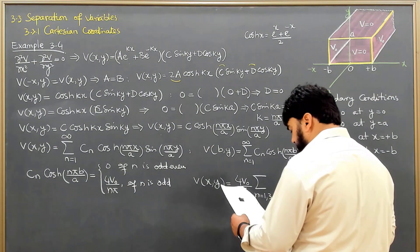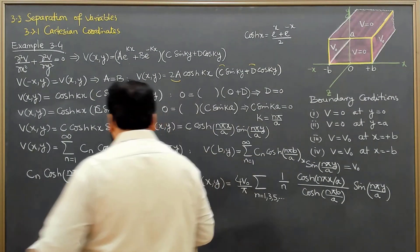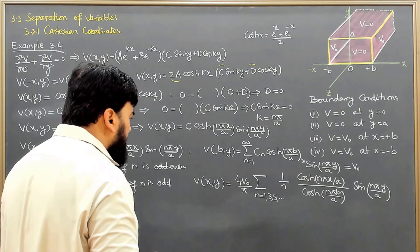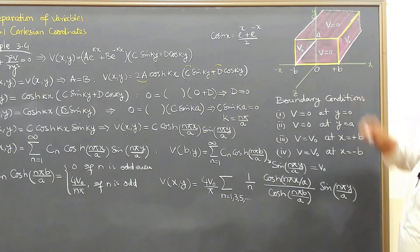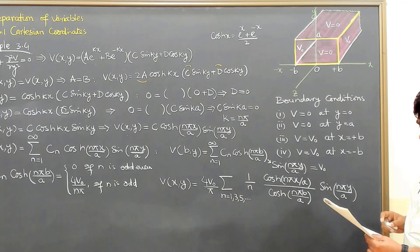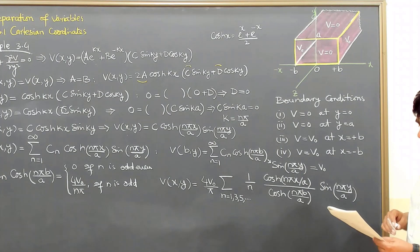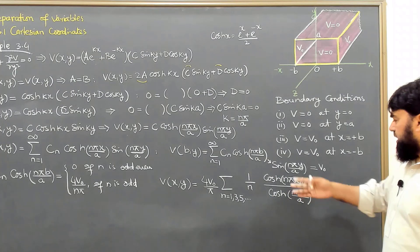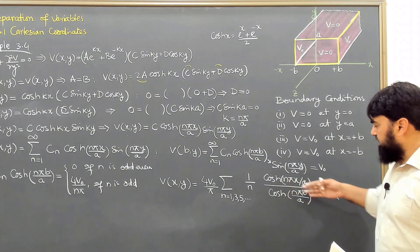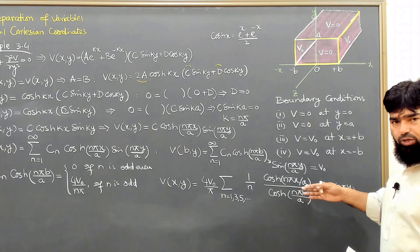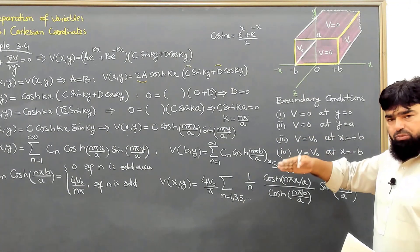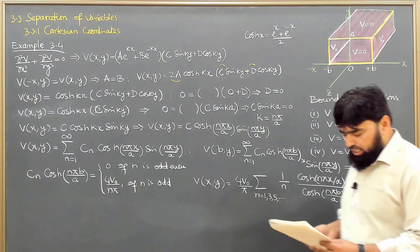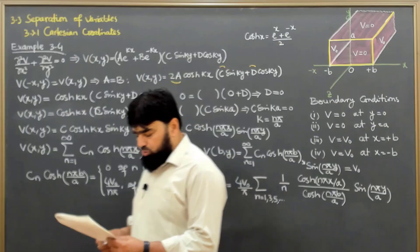So this gives us the solution of the potential for this geometry. The geometry is shown here, and it has a plot as well, which we have already discussed. It is a two-dimensional surface, and when we put values into this expression, we will see inside the box what the potential distribution looks like.